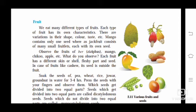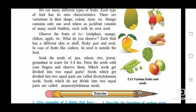Soak the seeds of pea, wheat, rice, jowar, groundnut in water for 3-4 hours. Press the seeds with your finger and observe them. Which seeds get divided into two equal halves? Peas can be divided into two equal halves. Seeds which get divided into two equal parts are called dicotyledonous seeds, and seeds which do not divide into two equal parts are called monocotyledonous seeds. Best examples: dicotyledonous seed is cashew, monocotyledonous seed is mango.